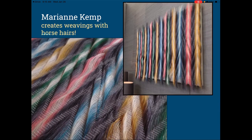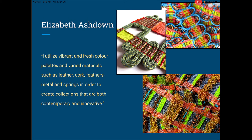Here's an artist who uses horse hairs — she dyes them different colors and weaves them through a piece of cloth. The edges are left rough with horse hairs hanging off, creating very textural artwork. Artist Elizabeth Ashdown uses all different kinds of materials, incorporating things like jump ropes and various cords into her weavings. She says: 'I utilize vibrant and fresh color palettes and varied materials such as leather, cork, feathers, metal, and springs in order to create collections that are both contemporary and innovative.'